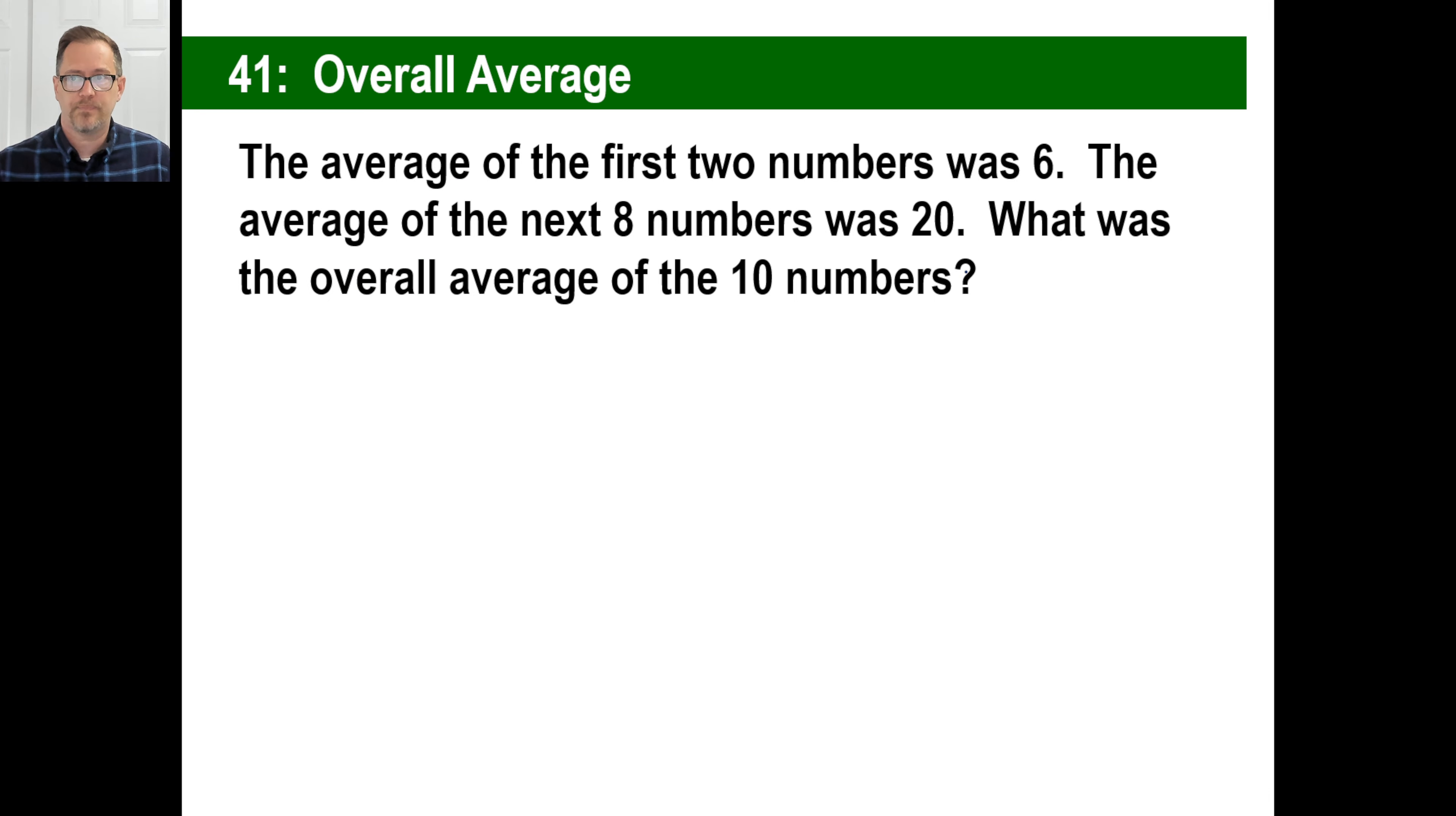The average of the first two numbers was six. Average of the next eight numbers was 20. What was the overall average of the ten numbers? In other words, you have got a couple of numbers. Their average is six. A bunch more numbers. Their average is 20. What was the overall average? Now, again, it's tempting to go, oh, 20, right in the middle of 26, that's 13. But the real average is going to be skewed way closer to 20 because there are eight of them as opposed to just two, right?